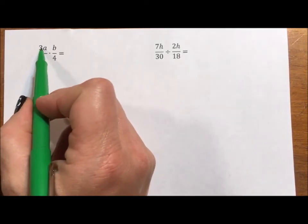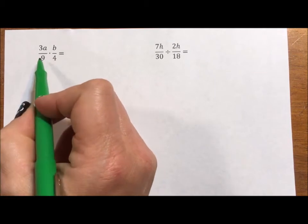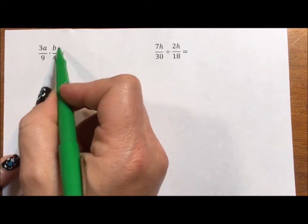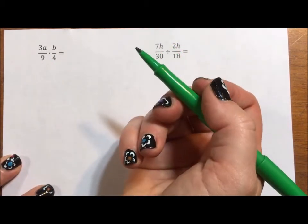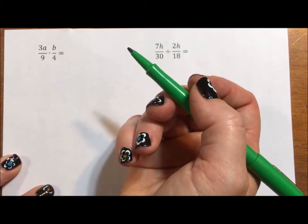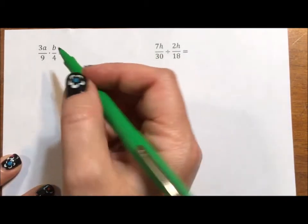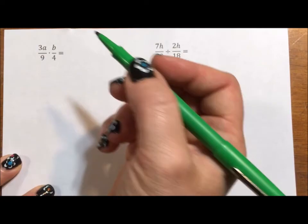When you're multiplying fractions, you're multiplying anything in the numerator and multiplying anything in the denominator. You do those multiplications separately. I also like to reduce my fractions before I multiply, so 3 over 9 can be reduced.